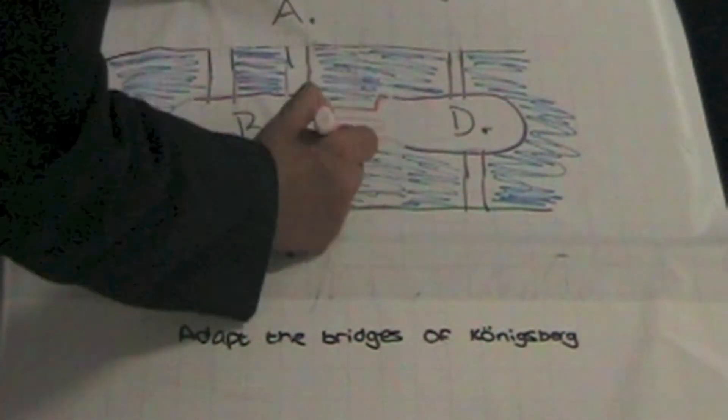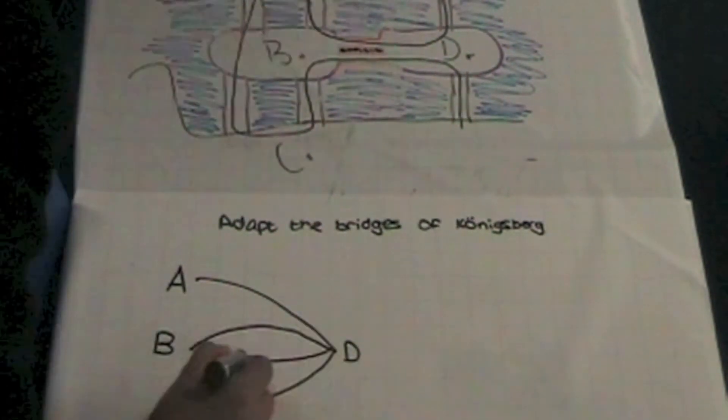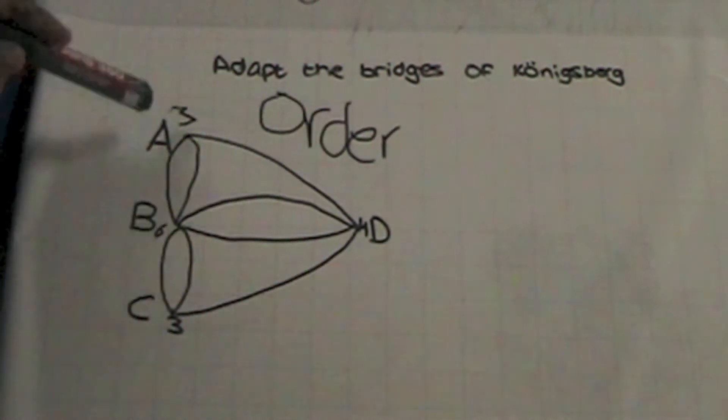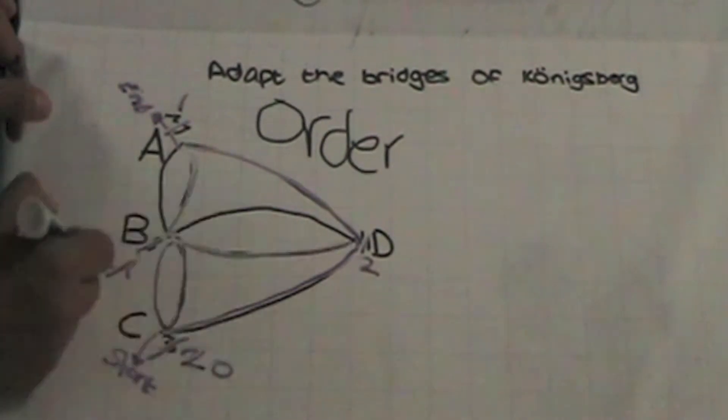We could make the bridges of Königsberg work by changing the bridge from B to D into two bridges. Now the graph looks like this. And the order of only two vertices are odd, giving us our start and end points. So the graph has become semi-Eulerian.